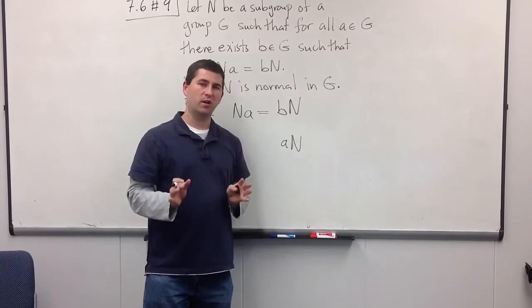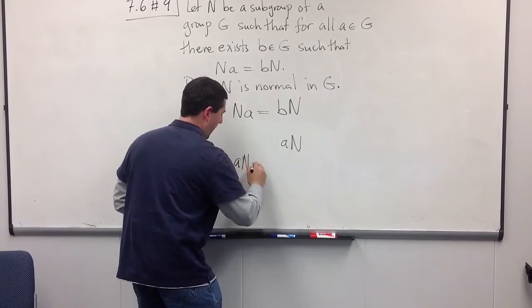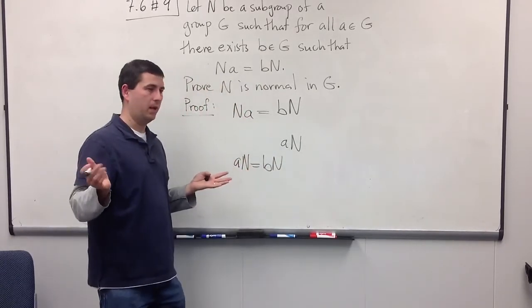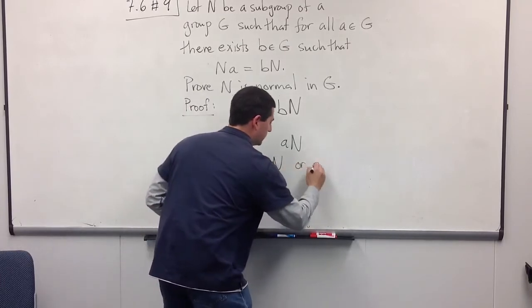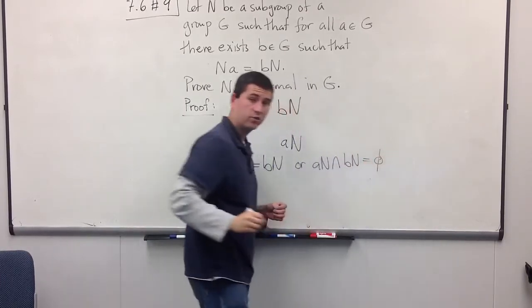And what is the relationship between these two? Well, since we know cosets partition the group, then we know that either AN equals BN, in which case we're really happy, or AN and BN are disjoint.